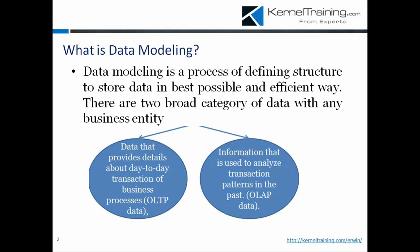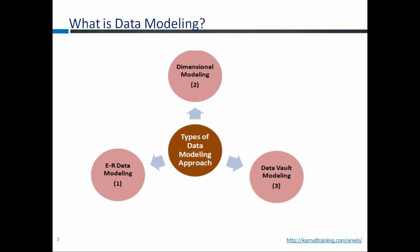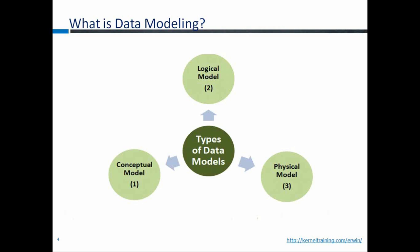If you want to become a data modeler and learn how to identify entities, make relations, understand conceptual and logical models — that is a different part of learning. There are three types of ER models: ER data modeling, dimensional modeling, and data vault modeling. At the modeling level, you need to create conceptual, logical, and physical models as we've discussed. The conceptual model is prepared by the business analyst or data modeler.